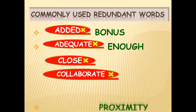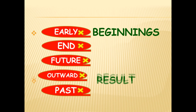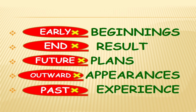Let's have a look at a few commonly used redundant words. The words displayed in red are unnecessarily used. Number one: 'added bonus' — 'added' is redundant. 'Adequate enough' — both give the same meaning. 'Close proximity,' 'collaborate together,' 'early beginnings,' 'end result,' 'future plans,' 'outward appearances' — appearance itself refers to something outward, so using 'outward' is unnecessary. 'External features' is similarly redundant.